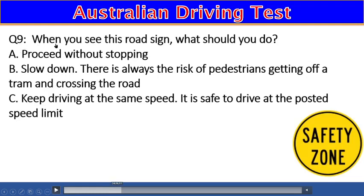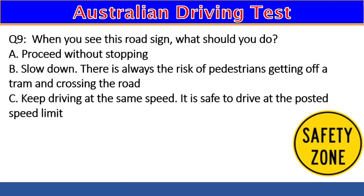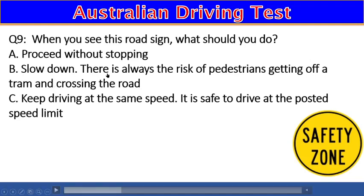Question 9: When you see this road sign (safety zone), what should you do? A) Proceed without stopping, B) Slow down — there is always the risk of pedestrians getting off a tram and crossing the road, C) Keep driving at the posted speed limit. The right answer is B — slow down, as pedestrians may be crossing after getting off a tram.